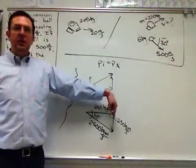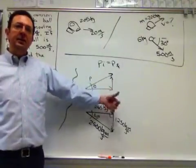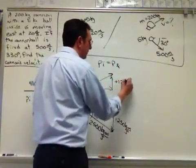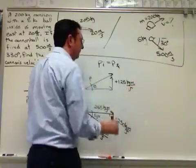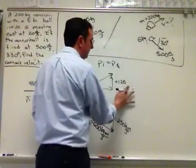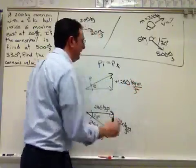So if this is 1250 in the negative y direction, this has to be positive 1250 in the y direction. Positive 1250 kilogram meters per second. Probably should write the 1250, 1250 kilogram meters per second.